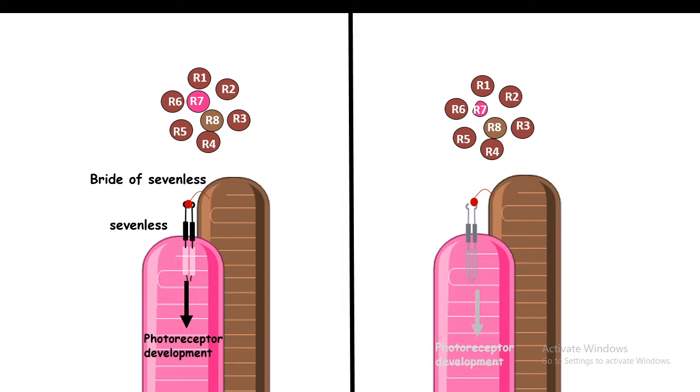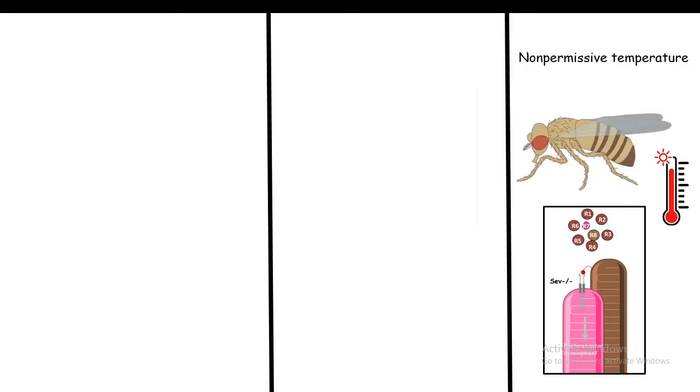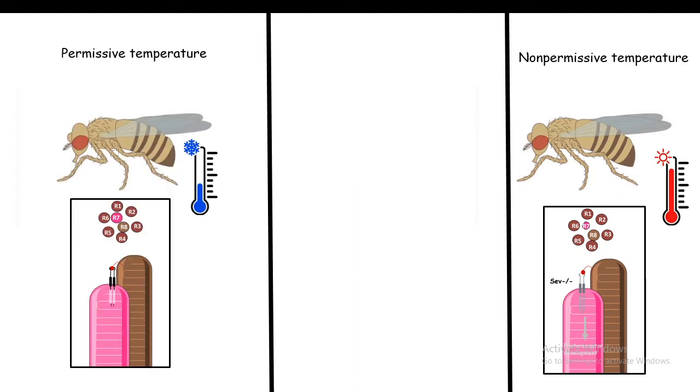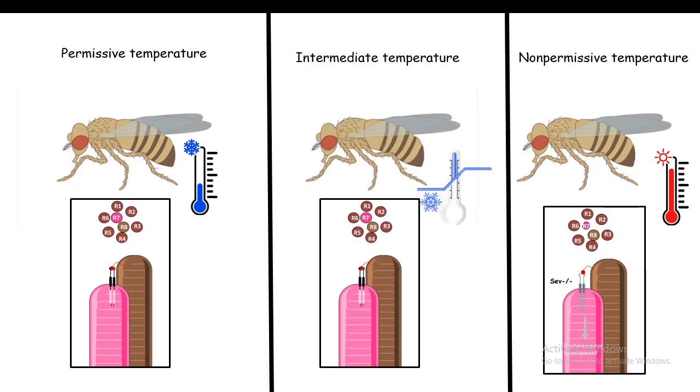Scientists did a very clever experiment—they used temperature-sensitive mutants. In a non-permissive temperature, these signaling components would be mutated and no signaling would take place, so eye development is perturbed. In a permissive temperature, the mutation's effect won't be visible and the fly would behave just like a normal fly. At an intermediate temperature...